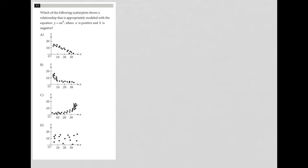This question asks which of the following scatter plots shows a relationship that is appropriately modeled with the equation Y equals AX to the B power, where A is positive and B is negative.